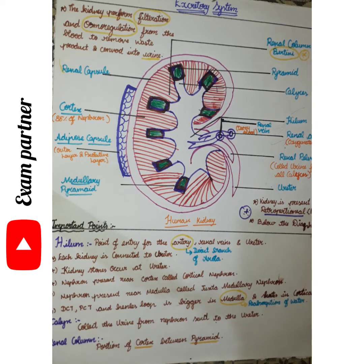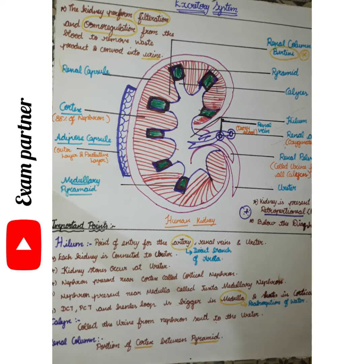All the urine is collected from the calyces into the renal pelvis. The renal pelvis then gives the urine to the ureter. In the renal pelvis, it collects urine and sends it to the ureter.